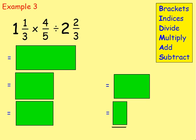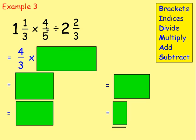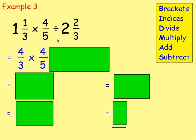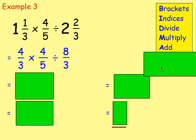Example three: one and a third multiplied by four fifths divided by two and two thirds. More than one operation, so we think about BIDMAS. We have mixed numbers, so first rewrite them as improper fractions. One and one third: one times three is three, add one is four — so four thirds. Two and two thirds: two times three is six, add two is eight — so eight thirds. We're multiplying four thirds by four fifths, then dividing by eight thirds.